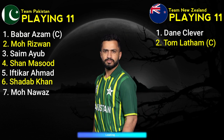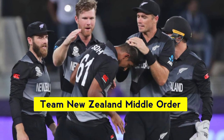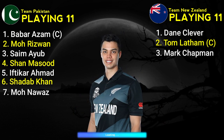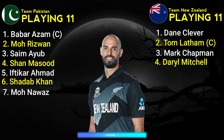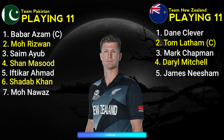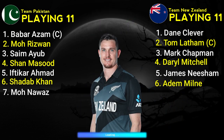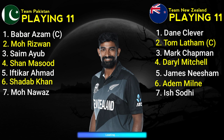Number 7 Mohammad Nawaz, right-hand all-rounder. Team New Zealand Middle Order: Number 3 Mark Chapman, right-hand batsman. Number 4 Daryl Mitchell, right-hand all-rounder. Number 5 Jimmy Neesham, left-hand all-rounder. Number 6 Adam Milne, right-hand all-rounder. Number 7 Ish Sodhi, right-hand spinner.